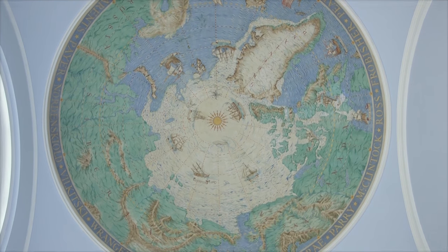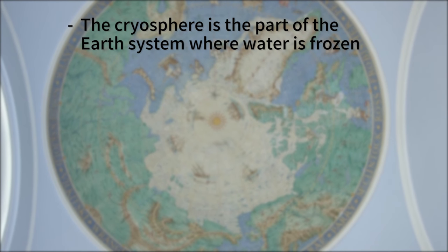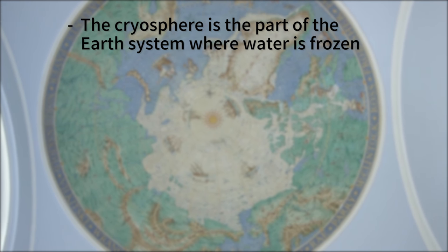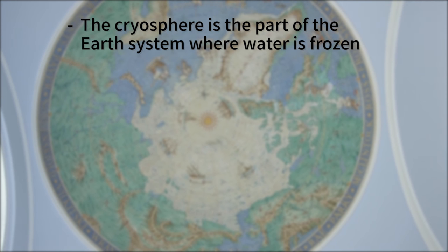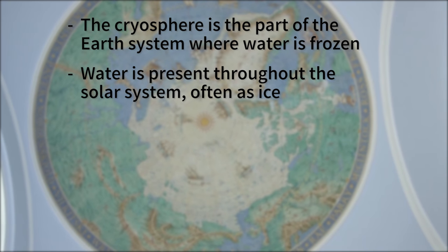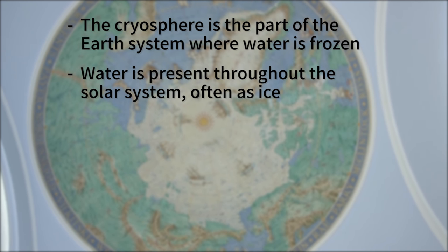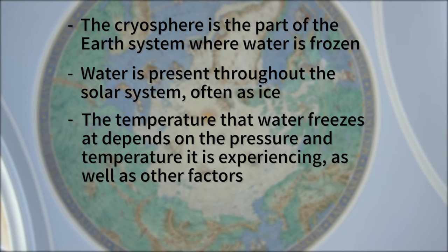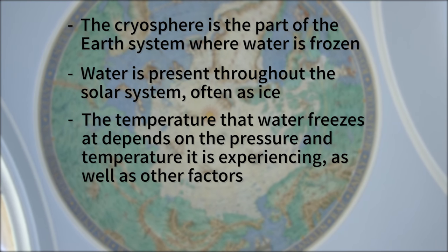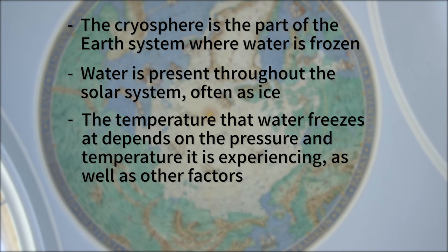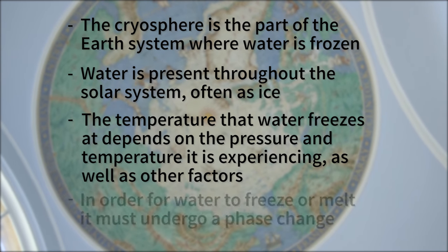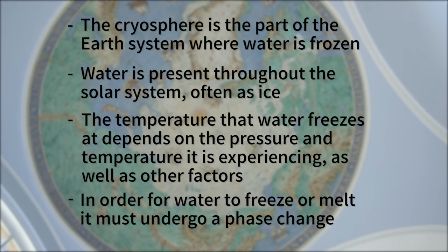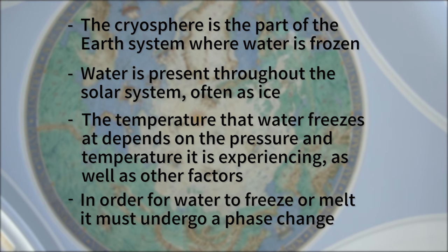In this episode we've covered that the cryosphere is any part of the Earth's system where water is frozen — this includes sea ice, the polar caps, and glaciers. That while we're considering the Earth's cryosphere, ice is everywhere in the solar system. That water freezes at a bunch of different temperatures depending on pressure, temperature, and other factors like nucleation. And lastly, that for water to freeze it must undergo a phase transition with associated latent energy.